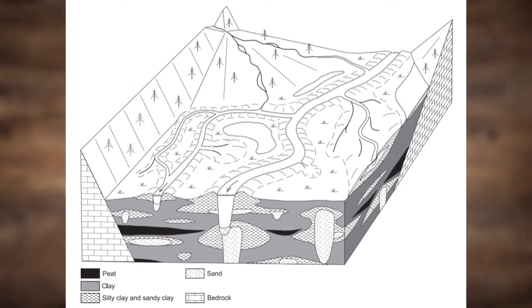If we look at a diagram of the anatomy of an anastomosing stream, you can see how bodies of sediment break up the river into this anastomosed pattern, while remaining interconnected.